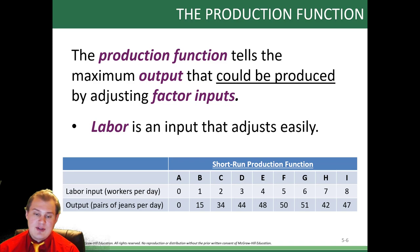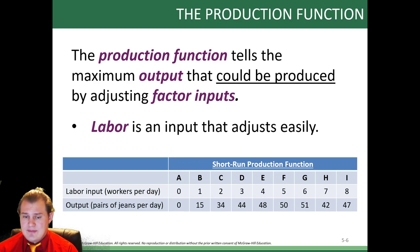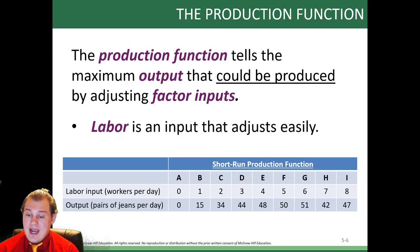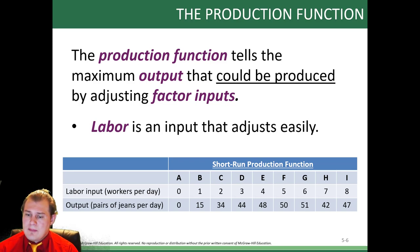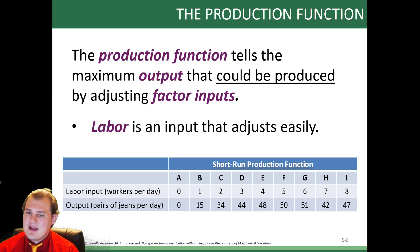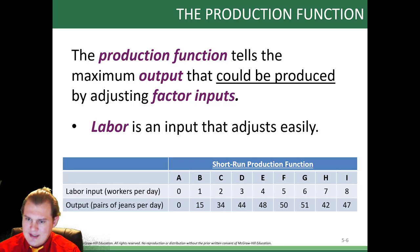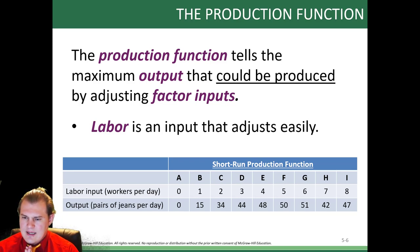Here's a short-run production function. We're looking at labor input — workers per day — versus output in pairs of jeans per day. We're looking at a jeans factory. If you have no one working, you're not going to get any jeans. If one person puts in an hour, we get 15 pairs of jeans. With two people working, we have 34 — that's about 17 jeans per person, more than with one worker. Because they're able to specialize — one cutting material, another sewing — they became more efficient.